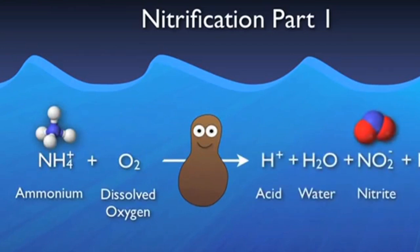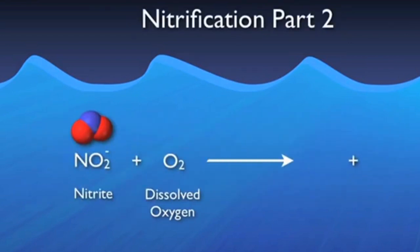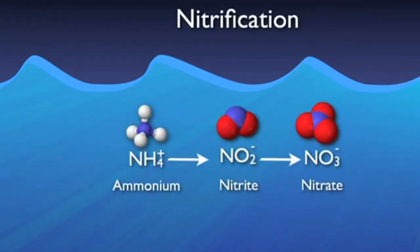If your system doesn't have adequate alkalinity, the acid produced here could create inhospitably acidic conditions for the bacteria, resulting in major process hiccups including loss of nitrification. The water produced is absorbed in the system, the nitrite moves on to the next step, and the energy is used by the bacteria to grow and multiply. The second step, for which a group of bugs known as nitrite oxidizers is largely responsible, takes that nitrite and more DO and converts it into nitrate and energy. This conversion from ammonia to nitrate is nitrification.